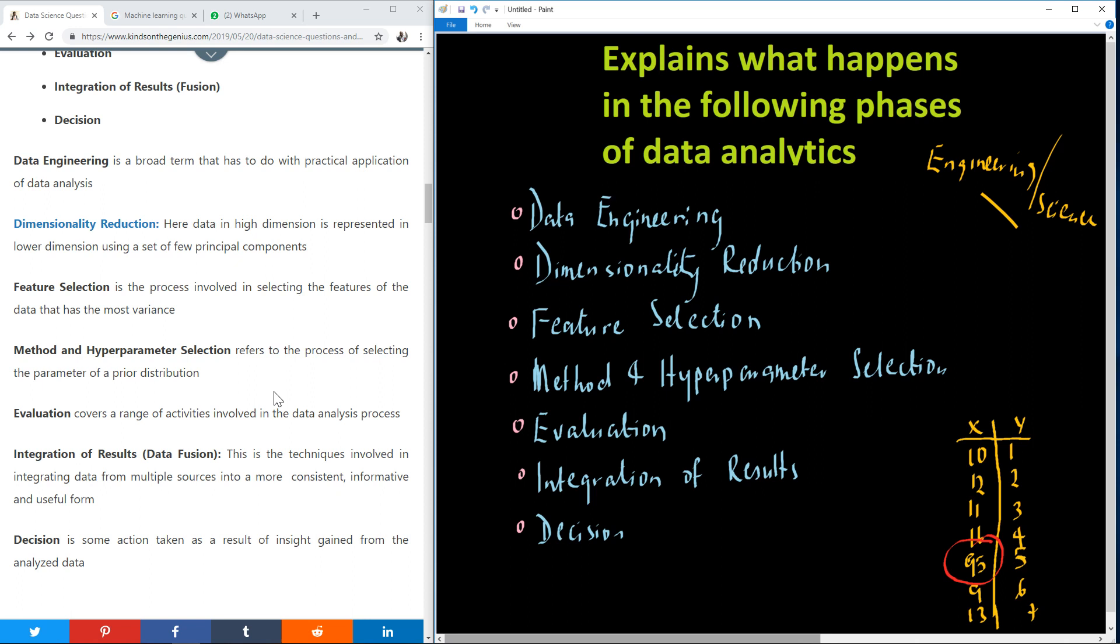Method and hyperparameter selection is the process of selecting the parameter of a prior distribution. I actually have discussed this in a different video. Try to check it out on my website www.kintondagenu.com data science, and you can find where you can read up hyperparameter selection and read about mainly prior distribution.